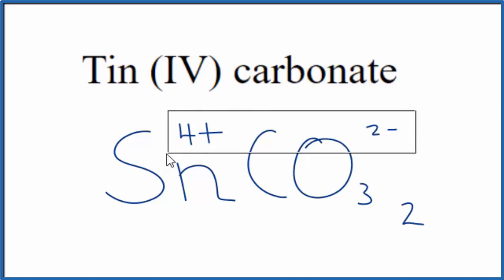So let's get rid of these symbols. And then we do need to put parentheses around the carbonate ion to show that we have two separate carbonate ions with this tin atom here. So this is the formula for tin(IV) carbonate, Sn(CO3)2.